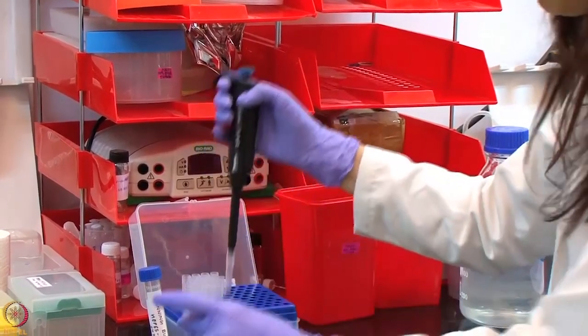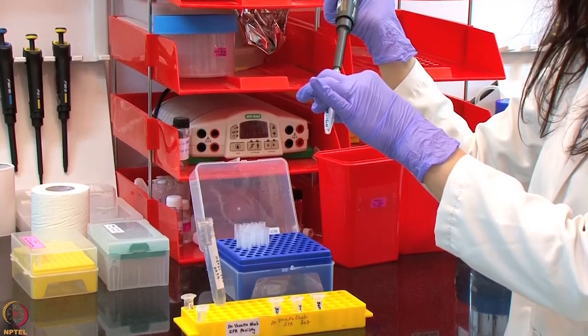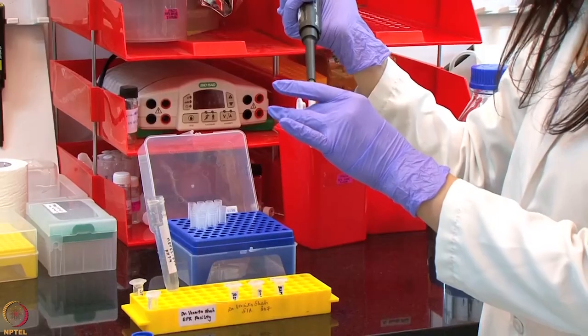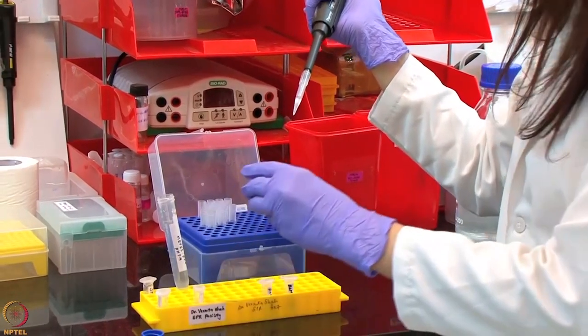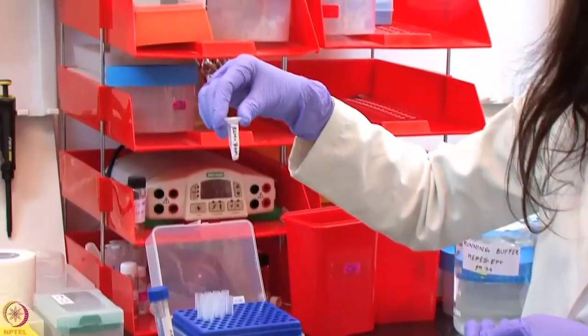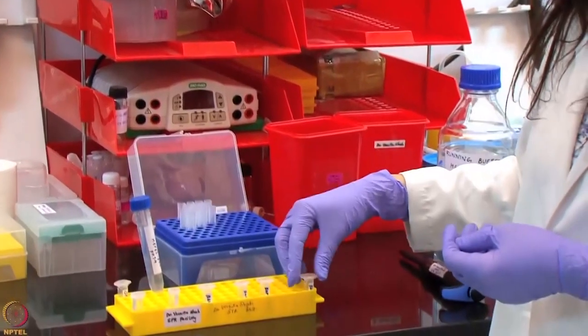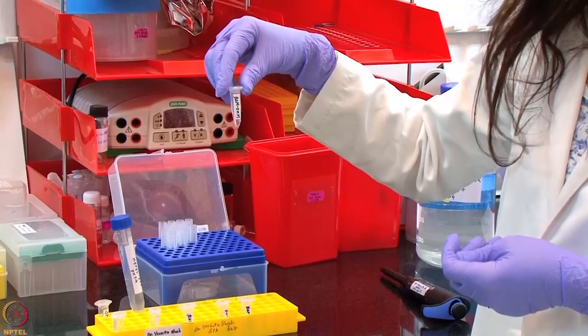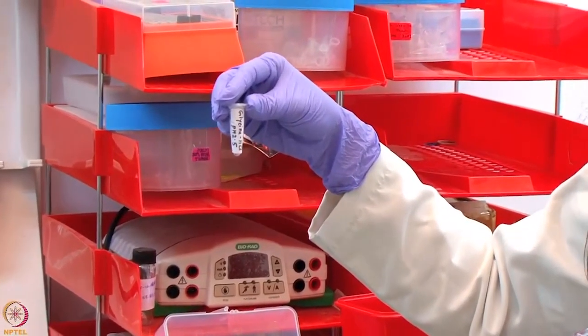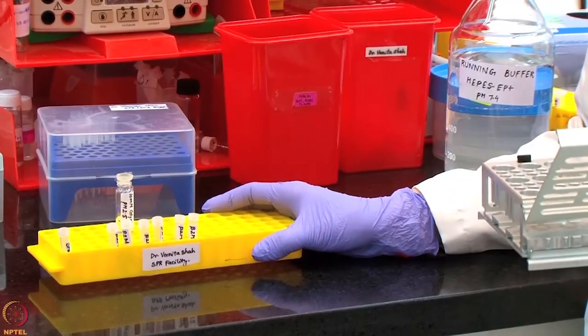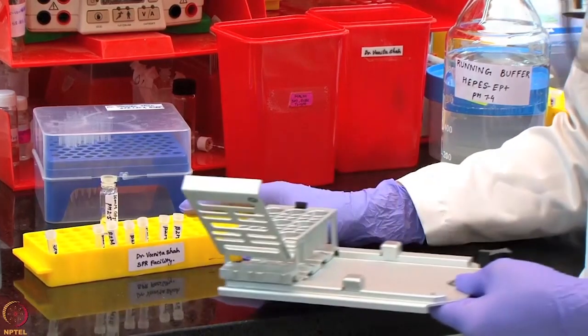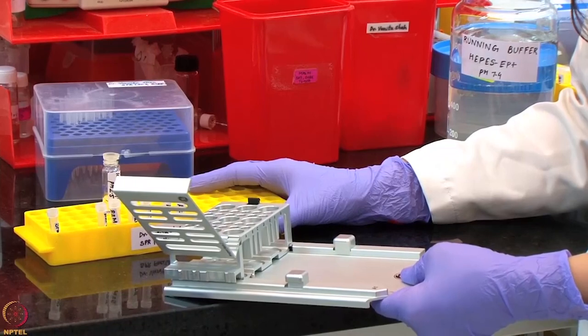We similarly continue with the dilution series for rest of the concentrations. One of the concentrations, that is 8 nanomolar, will be run in duplicate and we will also include a 0 nanomolar concentration in the experiment. For regeneration, we will be using glycine HCl pH 2.5 as the regeneration solution. All these samples and reagents have been transferred in the required volume in these specialized tubes and will now be inserted in the appropriate rack and then into the system for the kinetic interaction analysis.